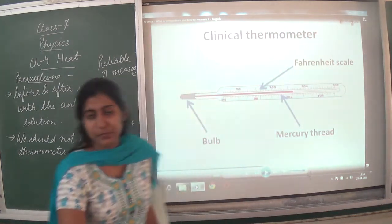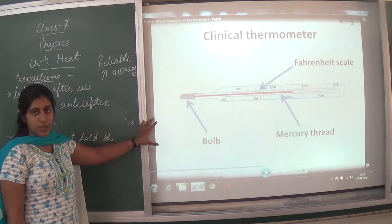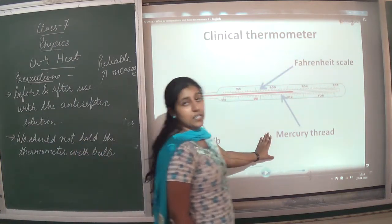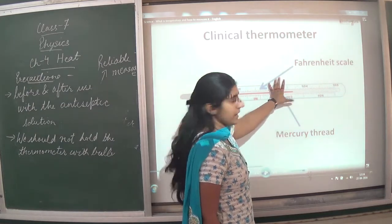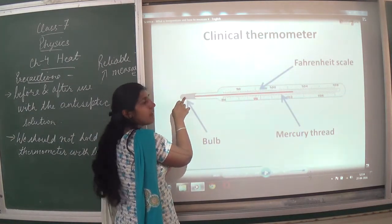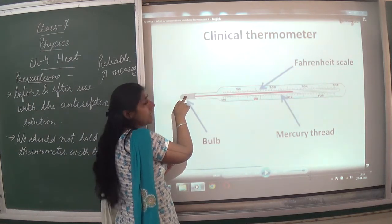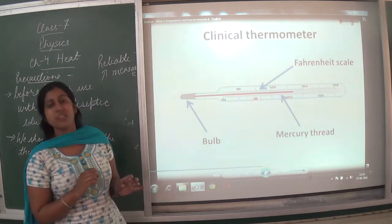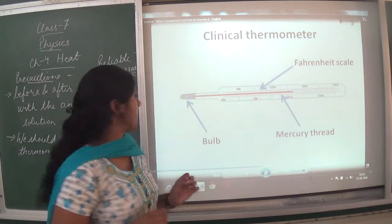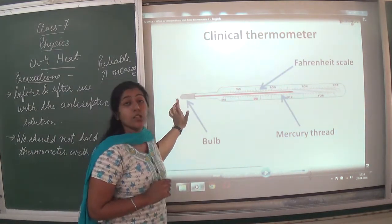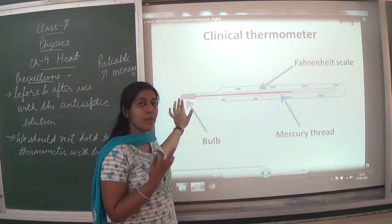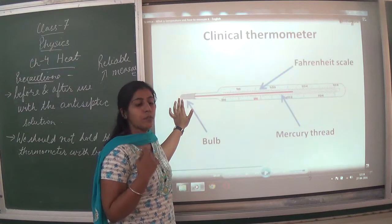The clinical thermometer consists of a bulb, mercury, a thread, and the scale. The clinical thermometer has a bulb which carries mercury. Mercury is a toxic substance — it is a metal which is in liquid state. It is a good conductor of heat, and therefore it measures the temperature of our body.